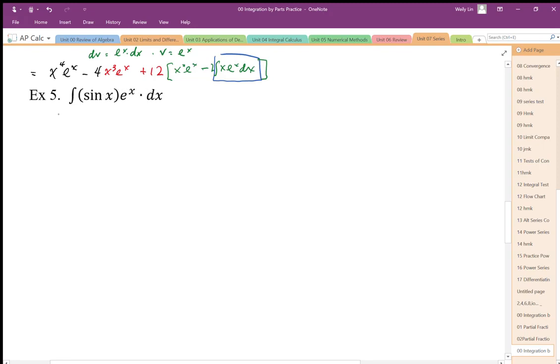Okay, so I'm going to let u equal sine x. And then my dv equals e to the x dx. So I end up with v is equal to e to the x, and du is going to be equal to cosine x.